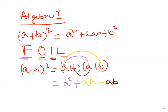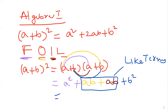Then finally, the Last one, b times b, which is b². So these are like terms. If I simplify this, I get a²+2ab+b².